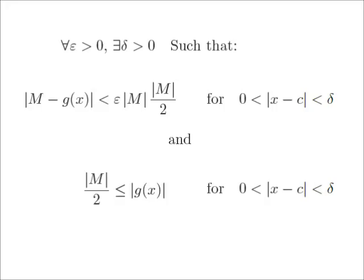So here are two things we have derived, given that the limit as x approaches c of g of x is m: first, for all epsilon greater than 0, there exists a delta greater than 0 such that if the absolute value of x minus c is greater than 0 and less than delta, the absolute value of m minus g of x is less than epsilon times the absolute value of m times the absolute value of m over 2. Second, the absolute value of m over 2 is less than or equal to the absolute value of g of x.